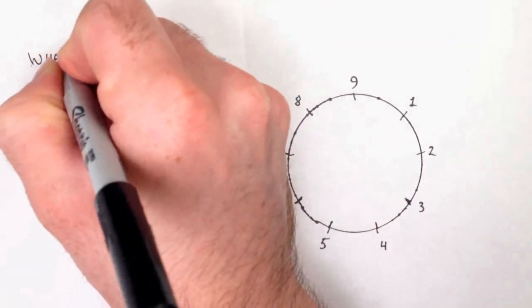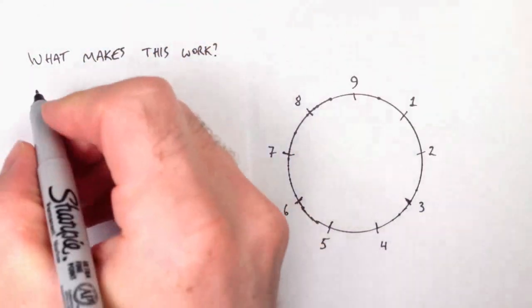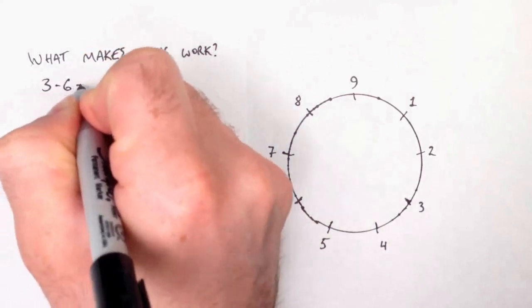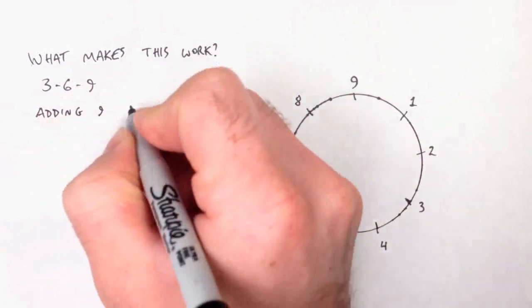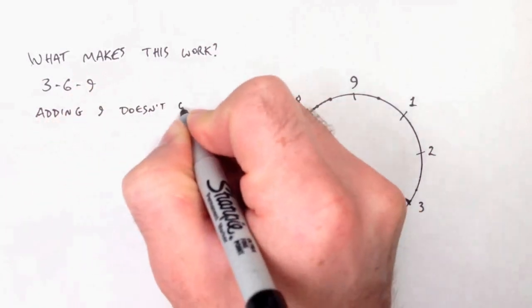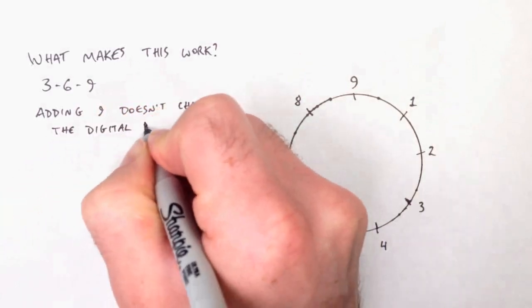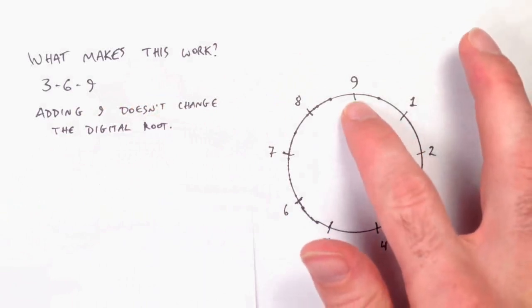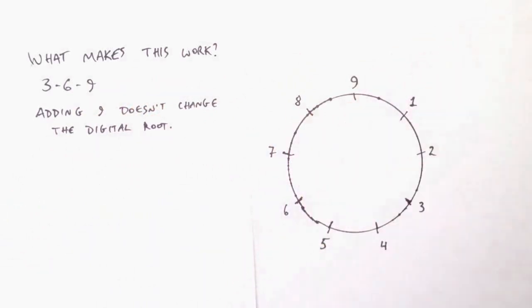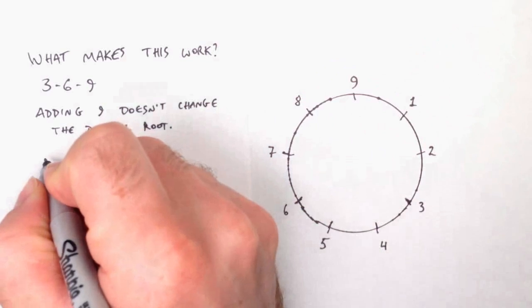Now that I've explained what vortex-based mathematics is, let's talk about what makes it work. First, the three, six, nine group. Nine is only special because adding nine doesn't change a digital root. There's nothing special or mysterious about nine. This is just a property of the decimal base 10 system. There are only nine digital roots to choose from here, so if you start at nine and then move nine around the circle, you end up exactly where you started. It doesn't matter where you start from.